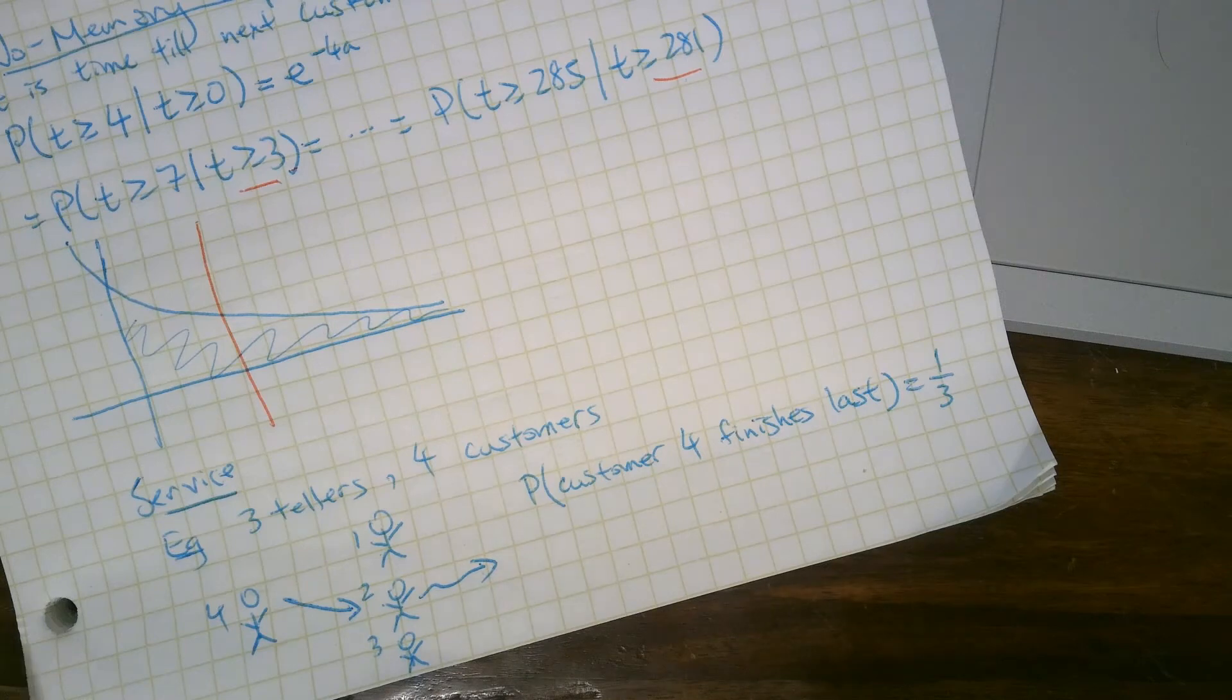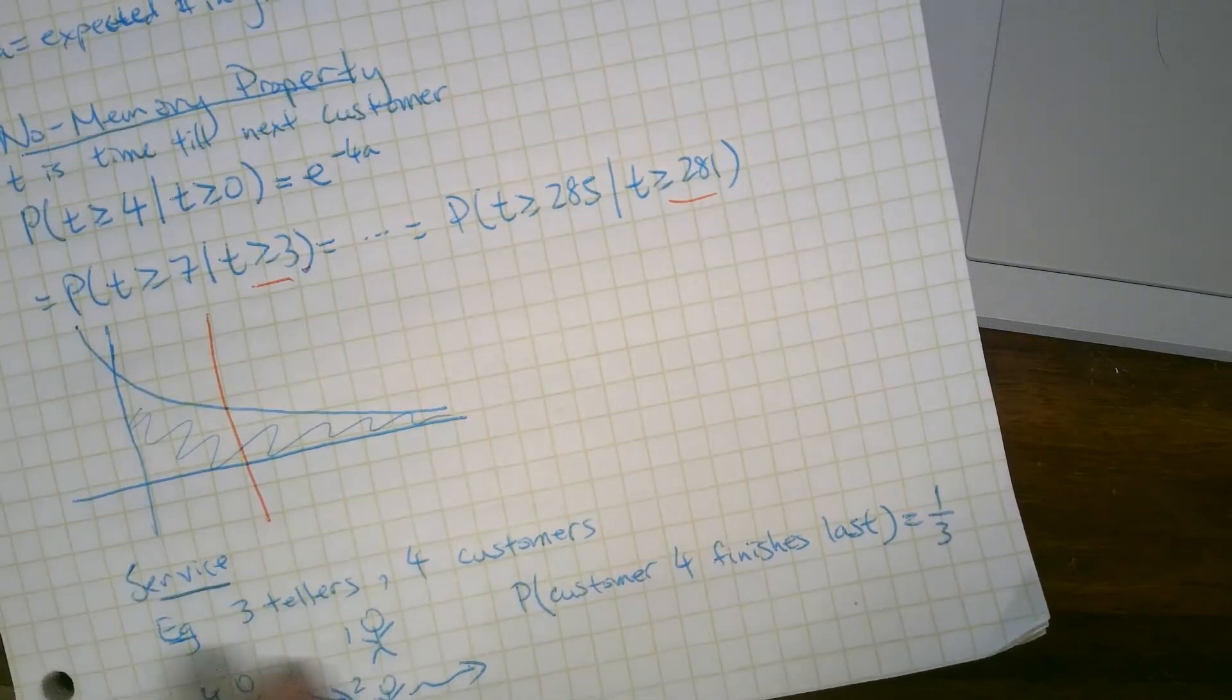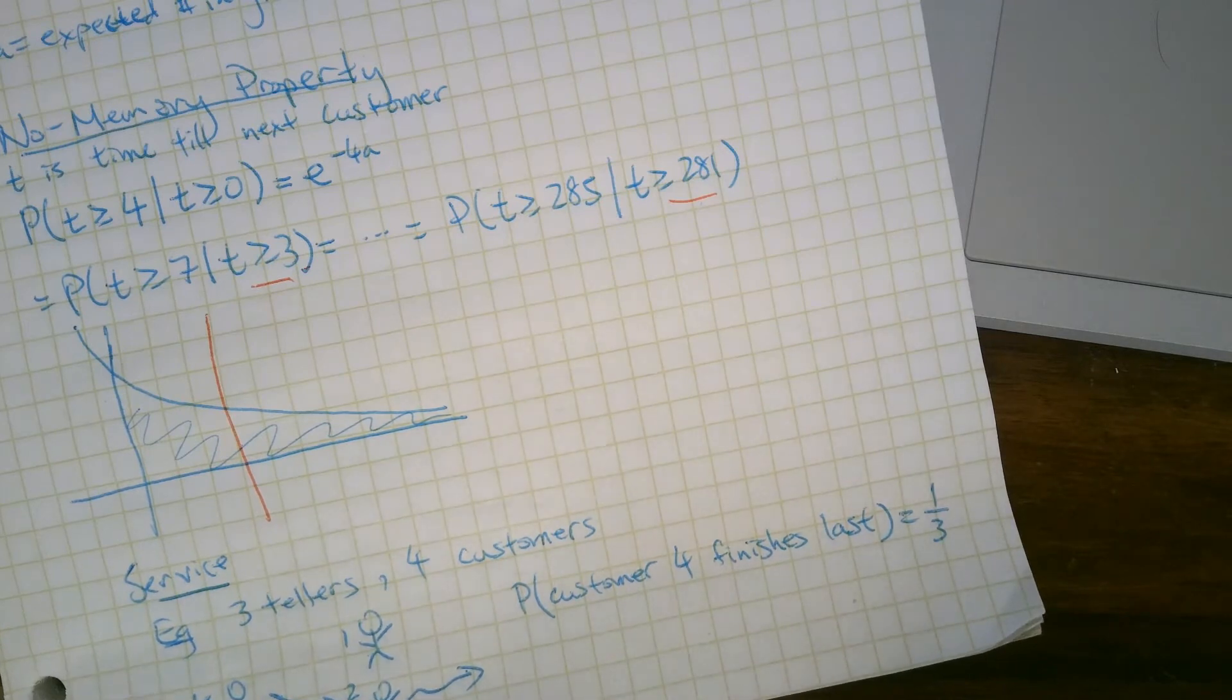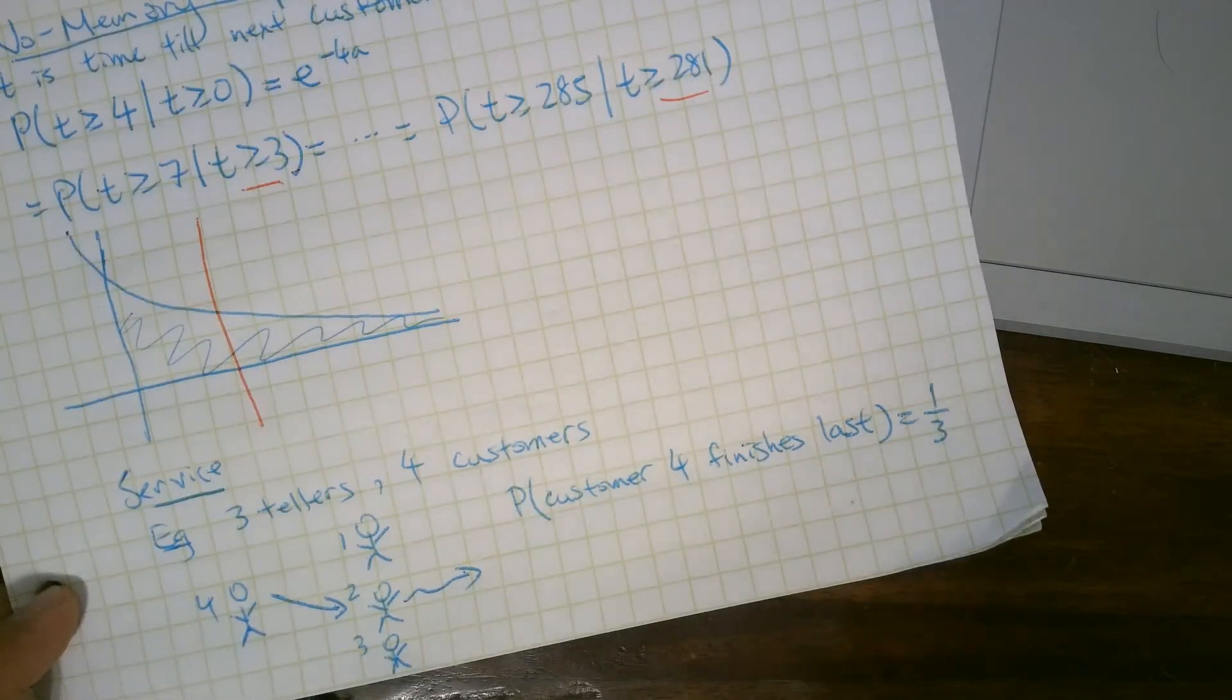So the no-memory property makes our math a lot easier because we didn't have to do anything here, but maybe not realistic for service.